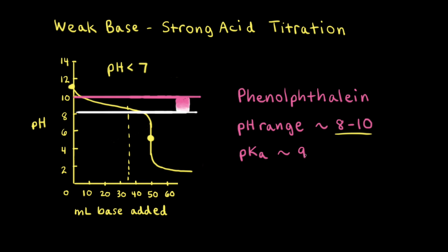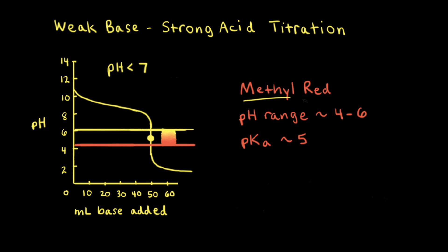Thinking about pKa values, the pKa value for phenolphthalein is approximately 9, which is not a good fit for the equivalence point pH, which appears to be between 4 and 6. Methyl red has a pH range of about 4 to 6 and a pKa value of approximately 5. Since the pH of the equivalence point is between 4 and 6, methyl red would be a good choice for this titration. To summarize: when choosing an acid-base indicator for a titration, choose an indicator whose color change occurs as closely as possible to the pH at the equivalence point.